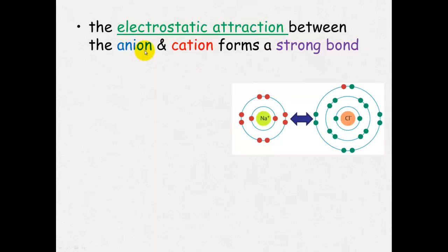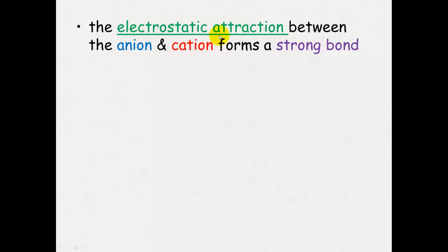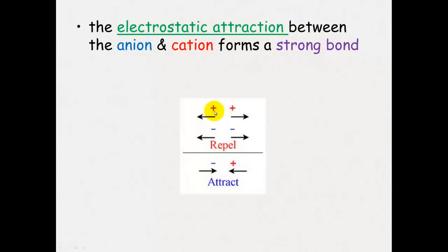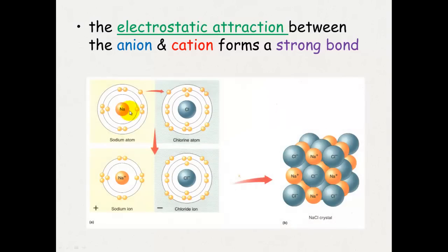It is the electrostatic attraction between the anions and the cations that forms the strong ionic bonds. There is now a positive charge on the sodium ion and a negative charge on the chloride ion. These attract one another — positive attracts to negative — and this is called electrostatic attraction. Like repels like: positive and positive will repel, negative and negative will repel, but positive and negative attract to one another.